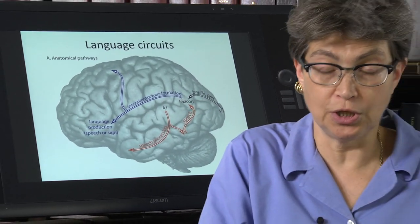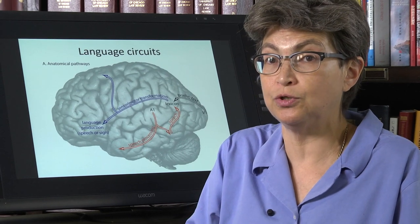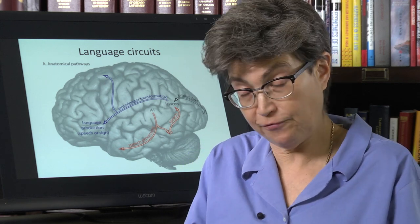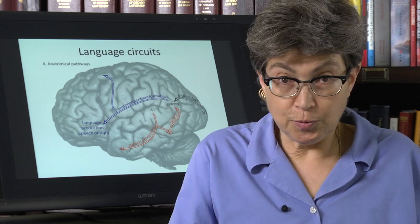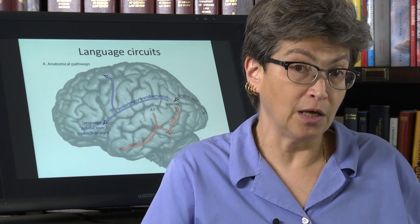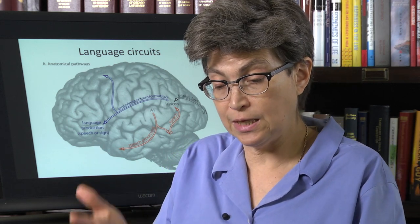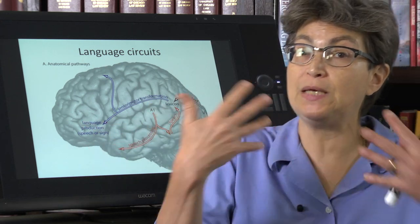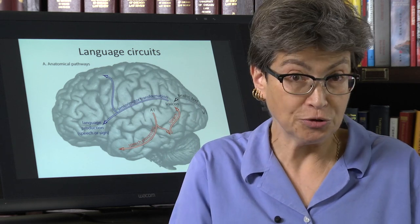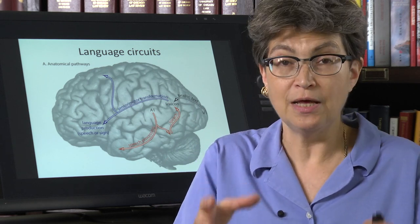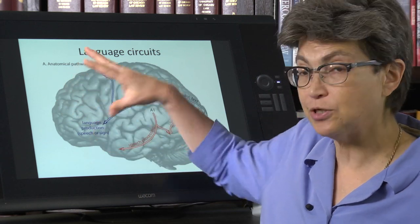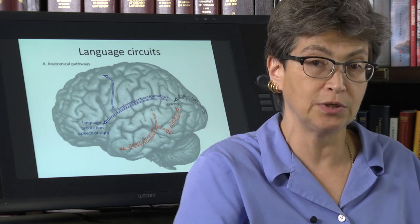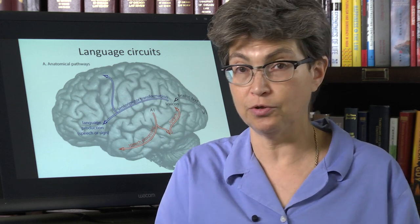And in most of us, the production of language involves speech. But in some individuals who are deaf from birth, language production is through sign language. Now, an individual who is a native sign language speaker and has a lesion here will not be able to sign. So what does that tell you? It tells you something very important. This area, these areas are involved in language production. Not speech production, language production. The ability to communicate, the ability to use language to communicate with another individual.